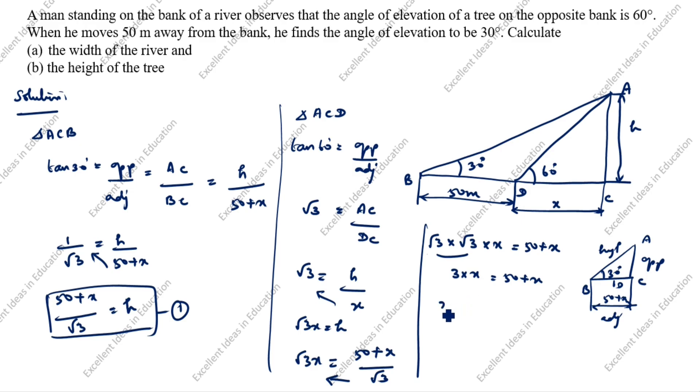3 into x is 3x. This x bring it to this side is minus x, here is plus, bring it to here is minus, equal to 50. 3x minus 1x, so 2x is equal to 50. x is equal to 50 divided by 2 equal to 25 meters.